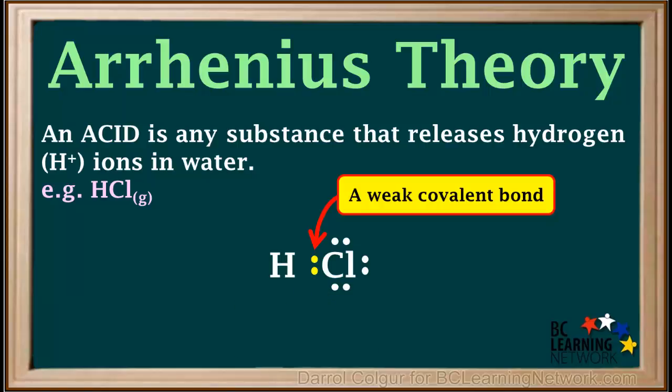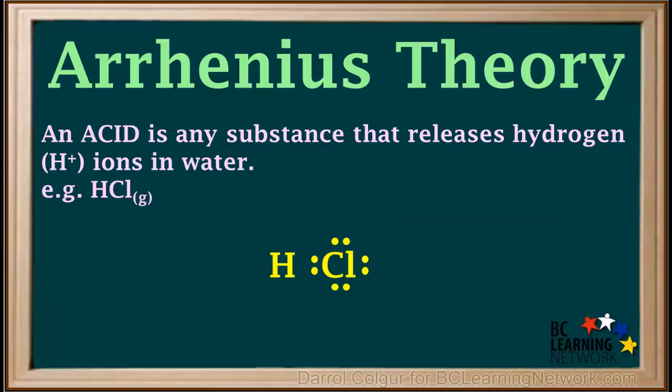However, the bond between hydrogen and chlorine is quite polar. And although it keeps the atoms together in the gas phase, when HCl is added to water, this bond is too weak to keep the H and the Cl together. When HCl is added to water, the molecule breaks up.